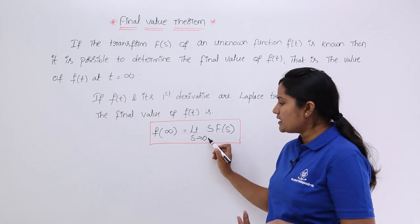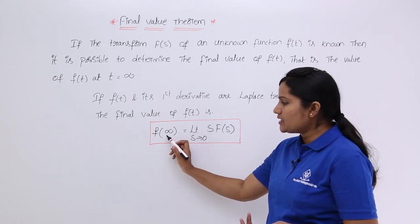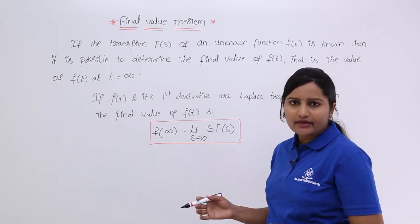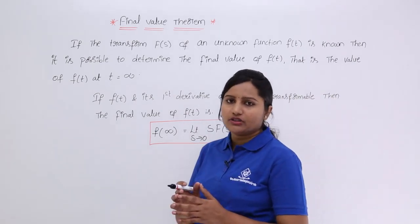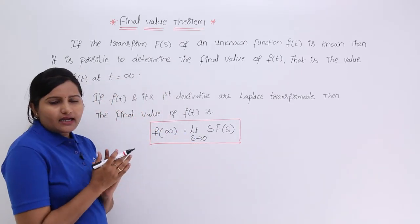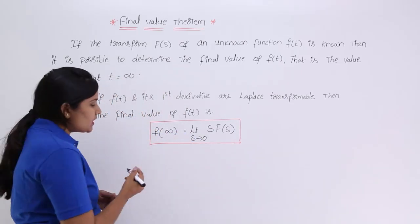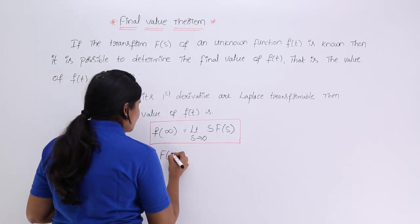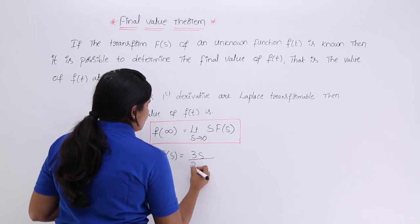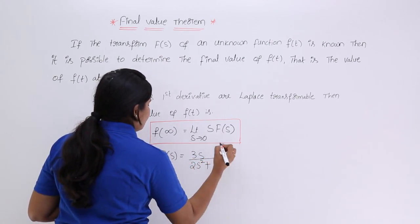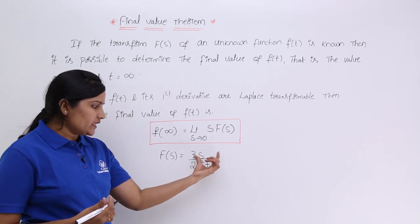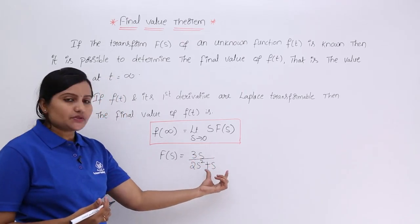The key difference is: for the final value (infinity), you take the limit as s tends to 0; for the initial value (0), you take the limit as s tends to infinity. That is the only difference between the two theorems. For better understanding, consider the example spectrum f(s) = 3s / (2s² + s).